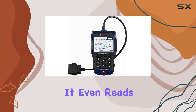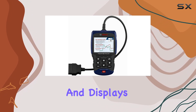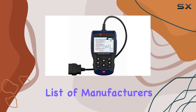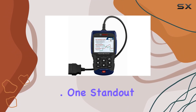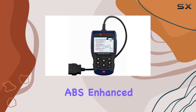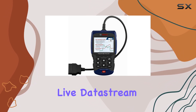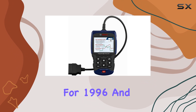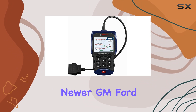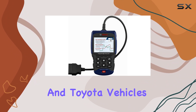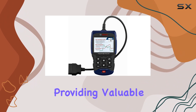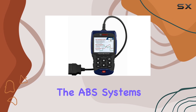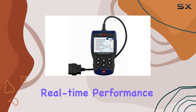It even reads and displays SRS airbag codes for an impressive list of manufacturers. One standout feature is the ABS-enhanced live data stream for 1996 and newer GM, Ford, and Toyota vehicles, providing valuable insights into the ABS system's real-time performance.